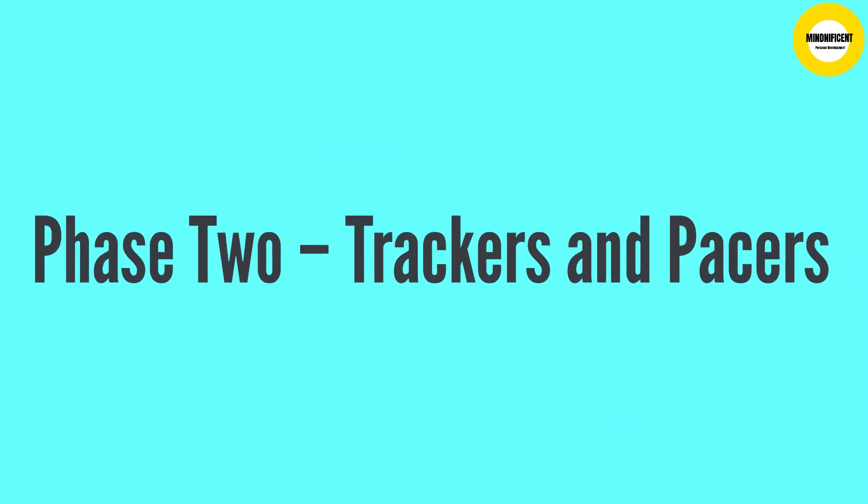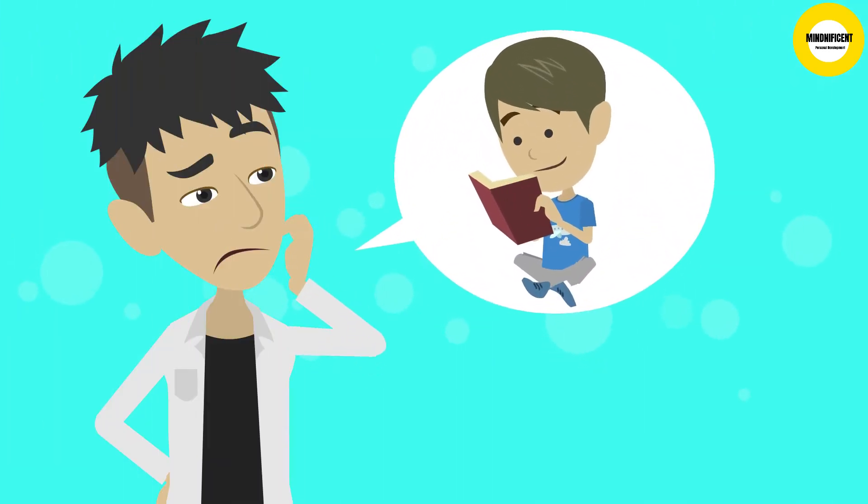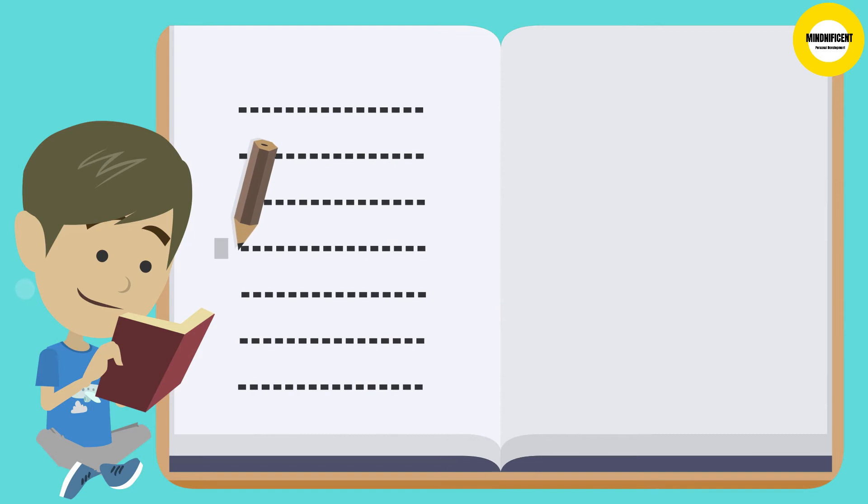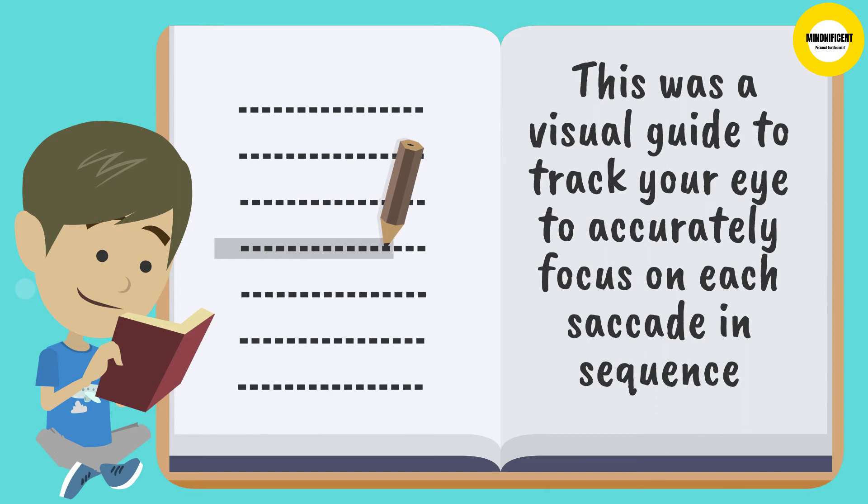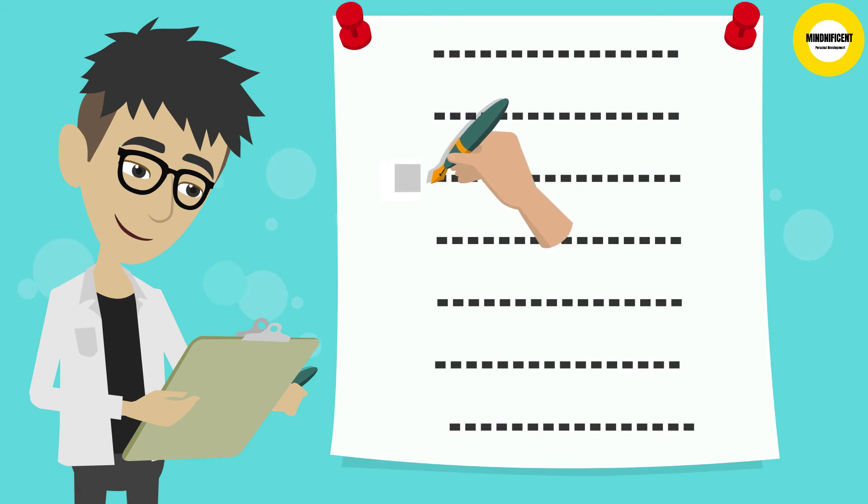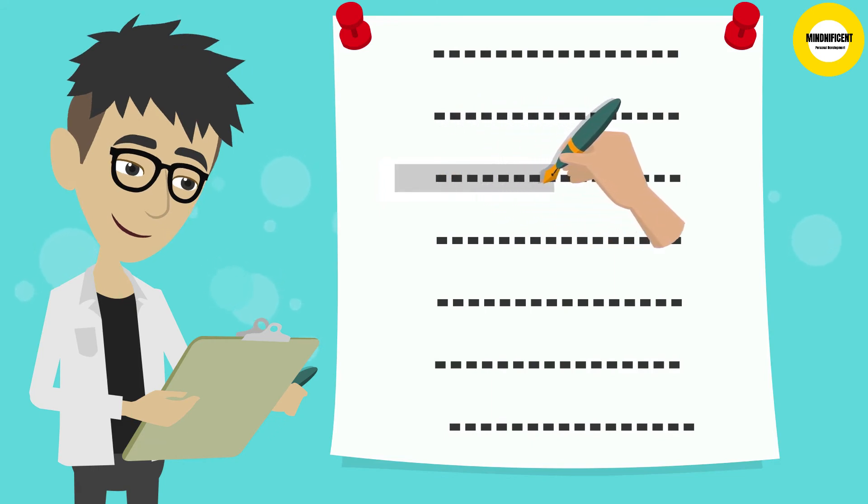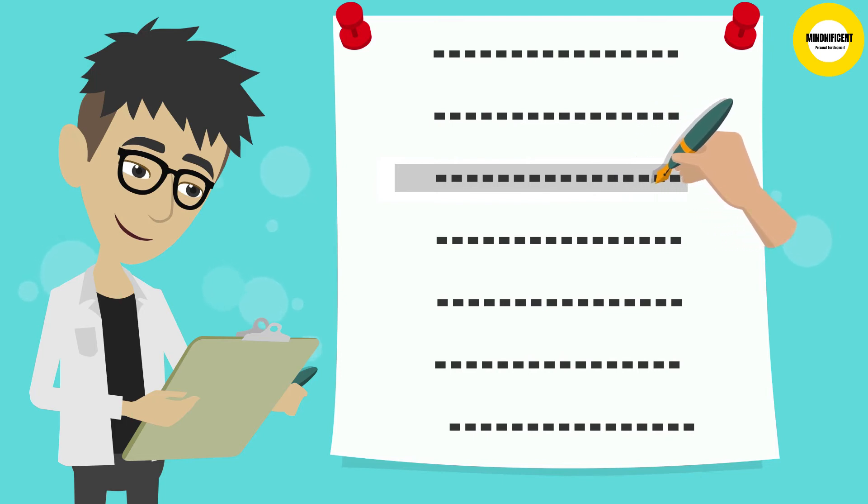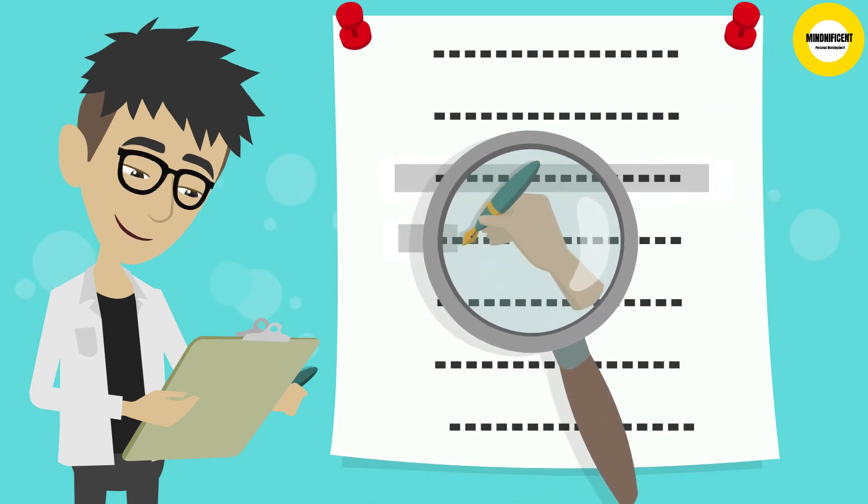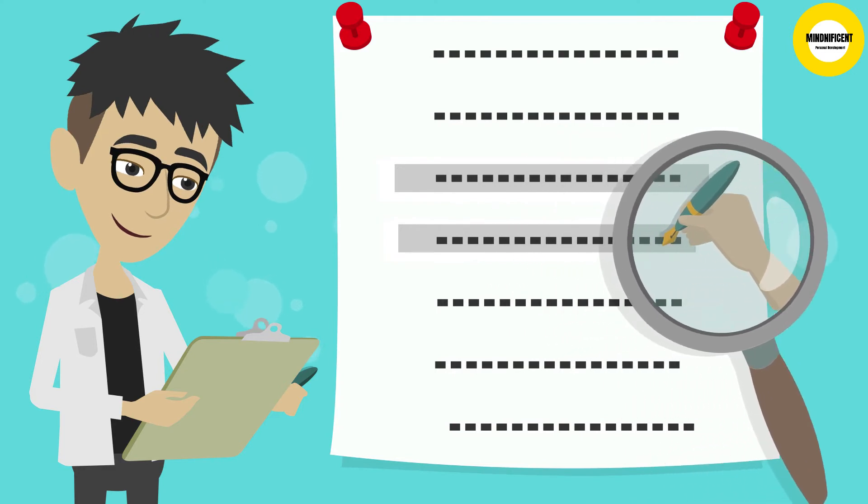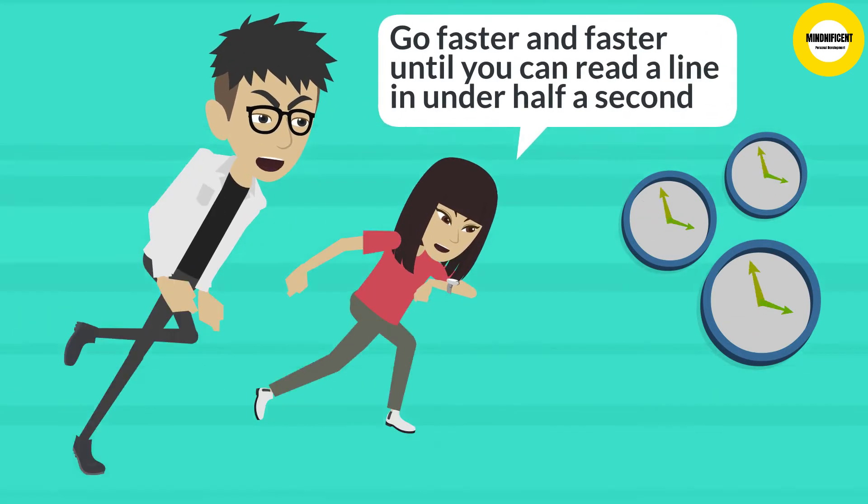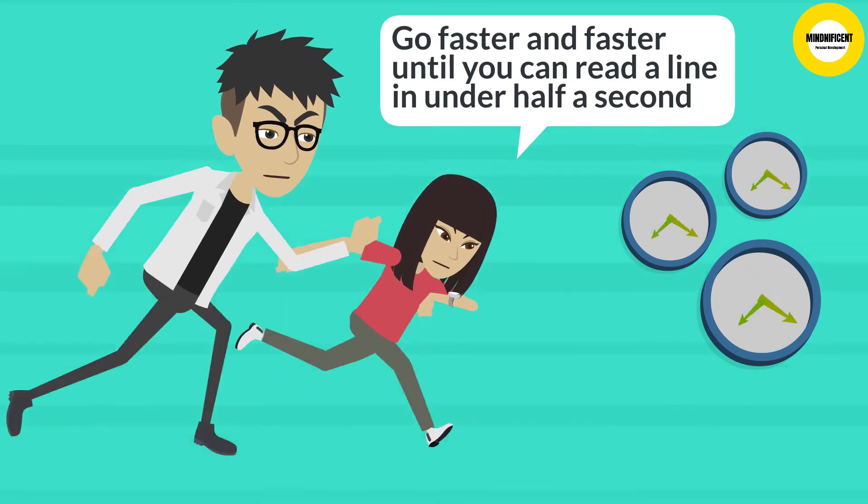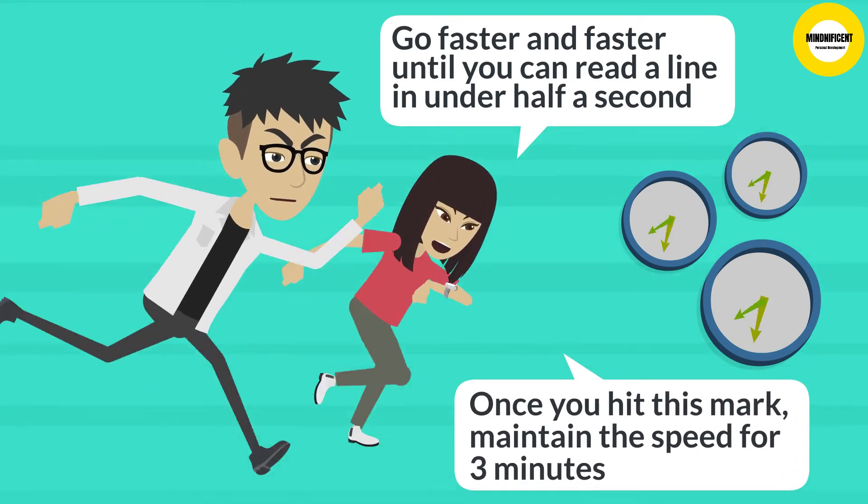Phase 2. Trackers and Pacers. Think back to when you first learnt to read. Did you use a pencil or finger to track along the line as you read? This was a visual guide to track your eye to accurately focus on each saccade in sequence. Time to go back to school. Grab a pen, lay it flat on the page, and try reading the same text again, following the words with the pen as you read. Focus on the tip of the pen and read as fast as you're able to without worrying about comprehension. This is a speed exercise. Keep up the pace and go faster and faster until you can read a line in under half a second. Once you hit this mark, maintain the speed for three minutes.